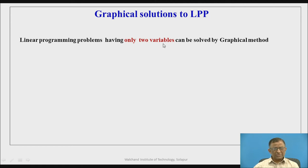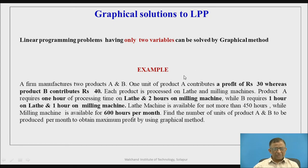However, if two variables are involved in the linear programming problem, it can be very well solved by graphical method. To explain the method, let me consider an example of a manufacturing firm which produces two products A and B. One unit of product A contributes a profit of Rs. 30, whereas product B contributes a profit of Rs. 40.